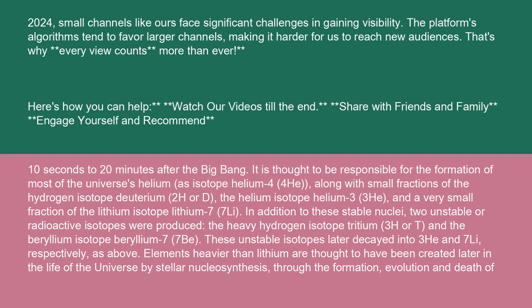In addition to these stable nuclei, two unstable or radioactive isotopes were produced: the heavy hydrogen isotope tritium (3H or T) and the beryllium isotope beryllium-7 (7Be). These unstable isotopes later decayed into 3He and 7Li, respectively, as above. Elements heavier than lithium are thought to have been created later in the life of the universe by stellar nucleosynthesis, through the formation, evolution, and death of stars.